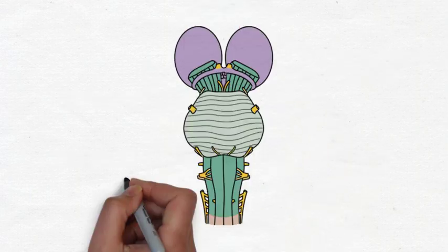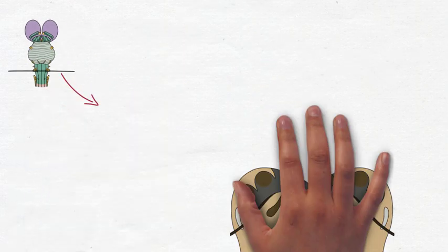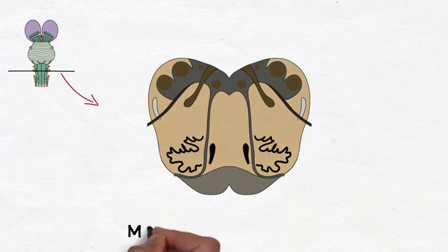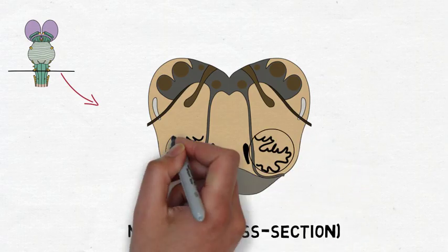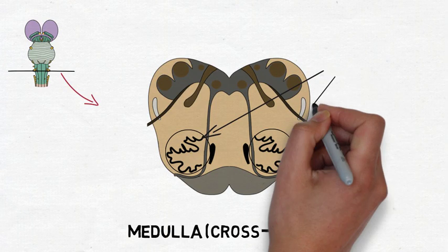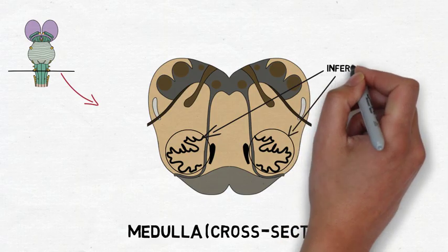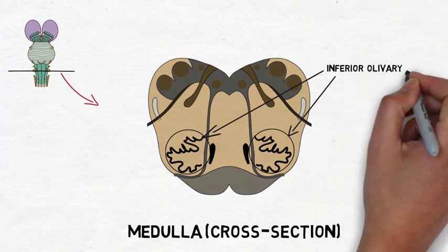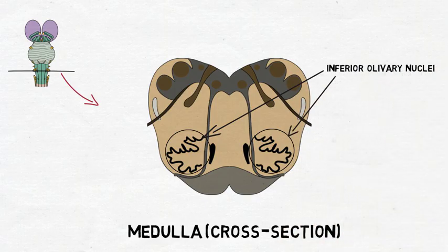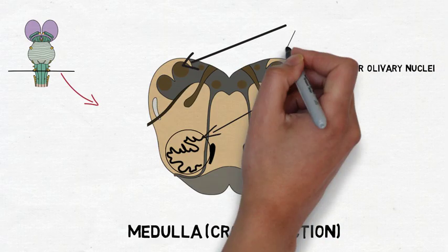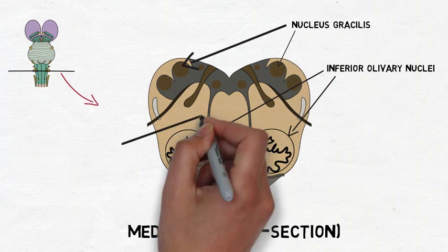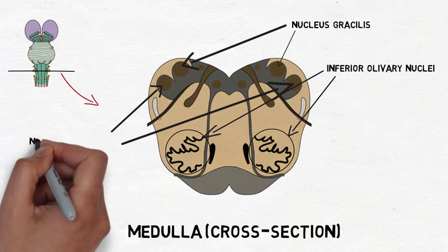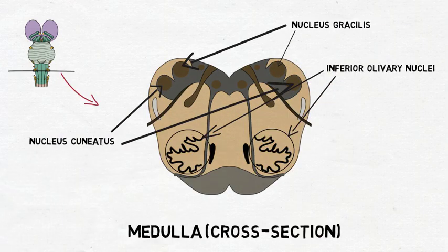The medulla also controls a number of other reflexive actions like swallowing, coughing, sneezing, and vomiting. It is home to the inferior olivary nuclei, which are connected to the cerebellum and involved in movement. It also contains the nucleus gracilis and nucleus cuneatus, important nuclei of the dorsal columns medial lemniscus sensory pathway.